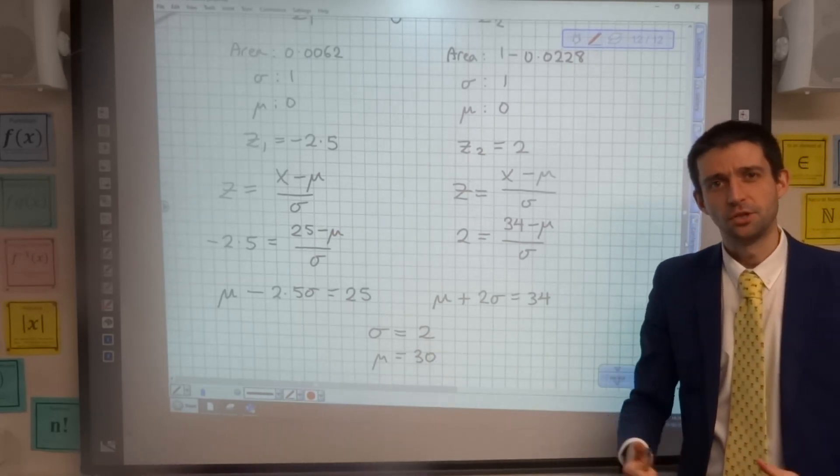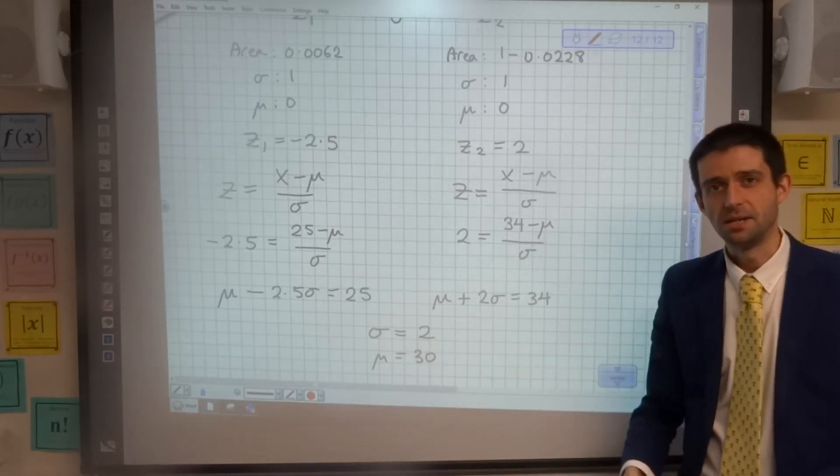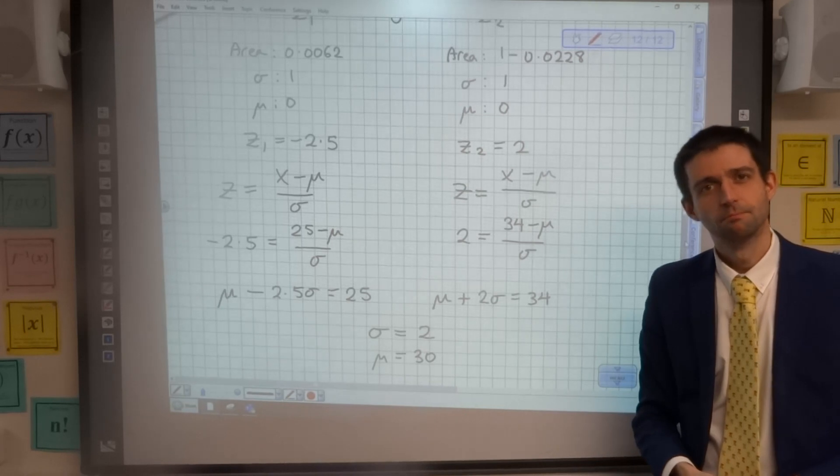So there you go: how to use the standardized normal distribution to find an unknown mean and an unknown standard deviation using simultaneous equations. Thanks for watching.